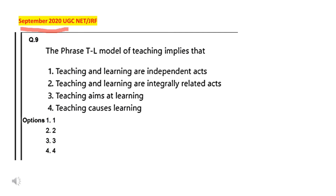This question was asked in the 2020 UGC NET/JRF exam conducted in September. The question is: the TL model of teaching implies what? Options given are: teaching and learning are independent acts; teaching and learning are integrally related; teaching aims at learning; teaching causes learning. We can easily eliminate the first option because teaching and learning are not independent acts. A student can learn without a teacher, so 'teaching causes learning' is also eliminated. The purpose of teaching is not learning alone, so that's eliminated too. Therefore, option 2 — teaching and learning are integrally related — is the correct answer.